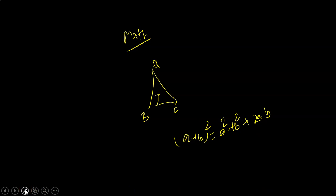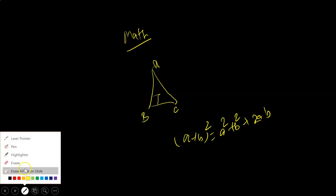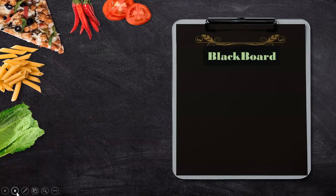If you want to erase the entire content, the same process as a physical board is not available here. Instead, click the third pen options, and you will get an option called 'Erase All Ink on Slides.' If you want to erase the entire board, use that option. If you want to erase one by one, use the eraser. I am using 'Erase All Ink on Slides' to erase everything in a single click. To go to the next slide, you can use the navigation option or press Enter.